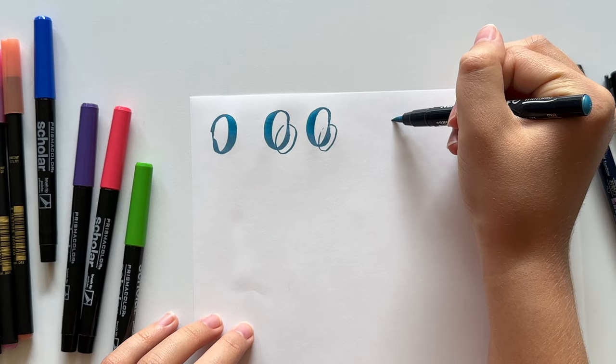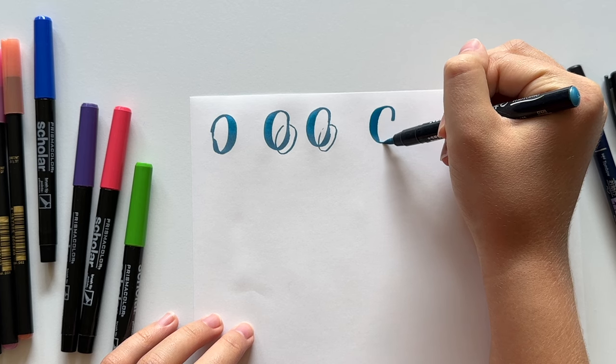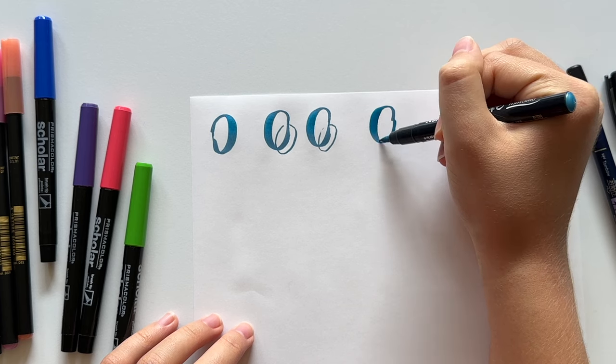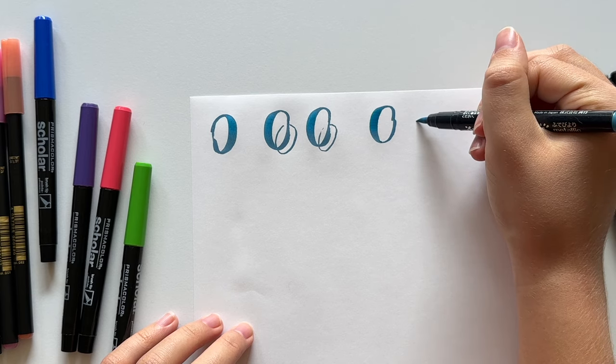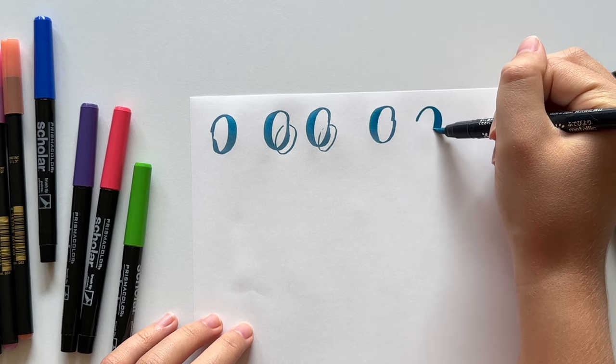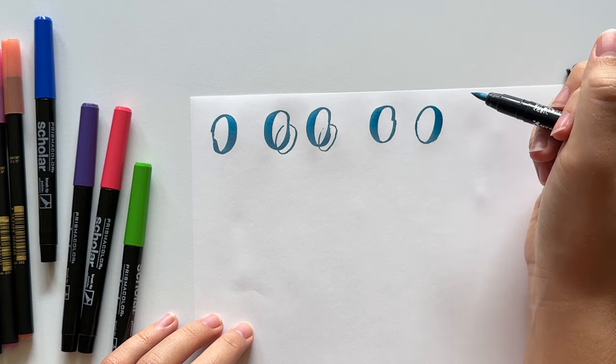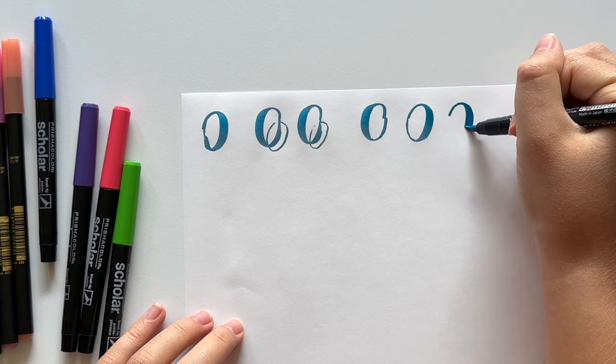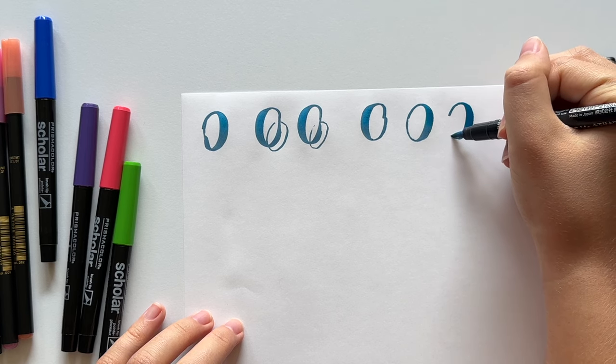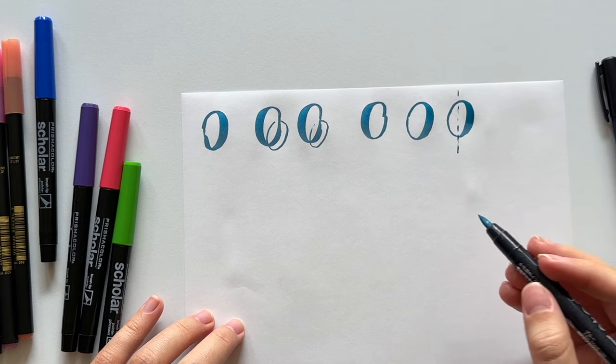So that trick of starting to adjust pressure earlier also works for this. So in this case, I would start to release pressure earlier, so I didn't drag too much thickness up into that upstroke. I'll slowly release that pressure so that I can come up light. So whether it's at the top of the oval or the bottom, work on that transition earlier so that we keep the thickness on one side and we keep it thin on the other side.